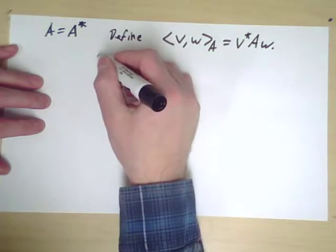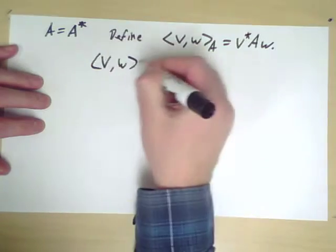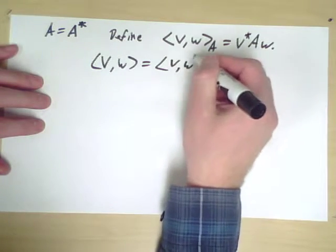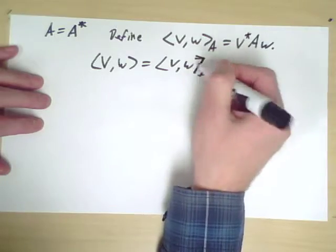Note that our traditional inner product V W is really V W I, and certainly the identity is a Hermitian matrix.